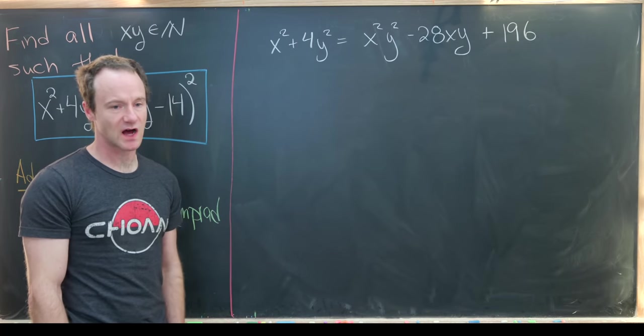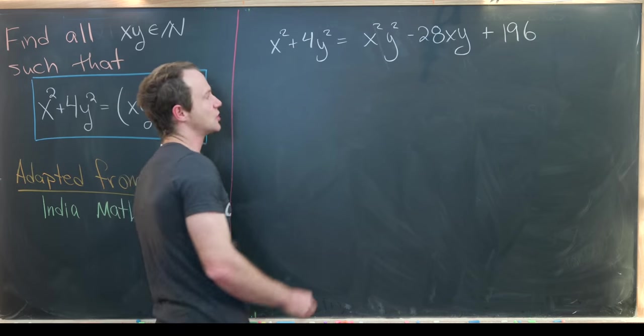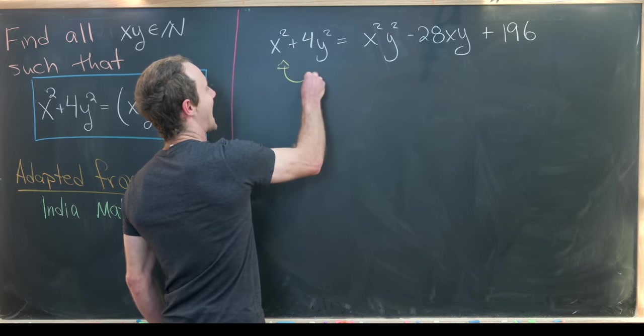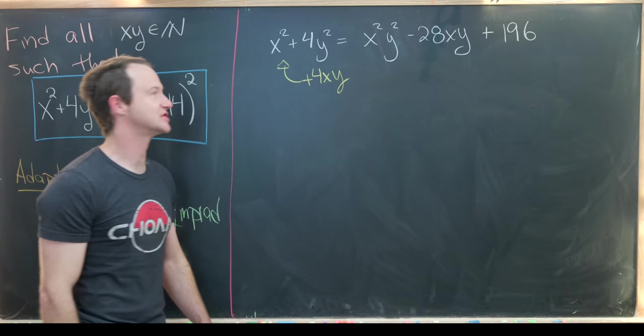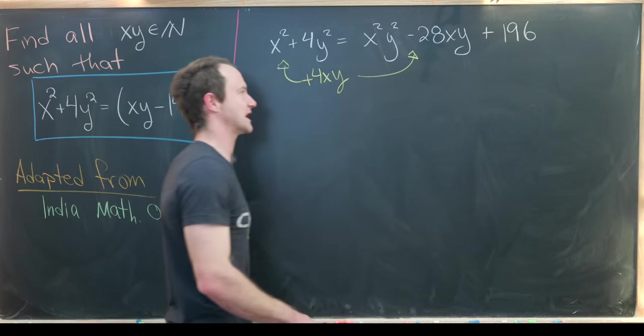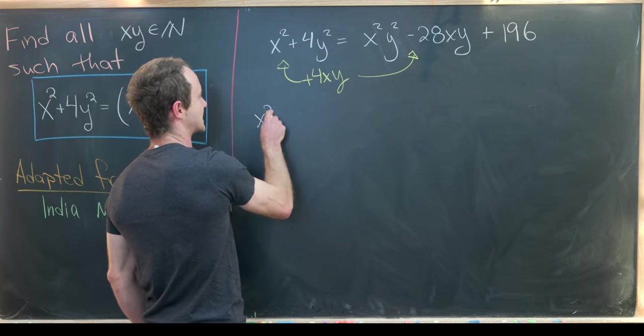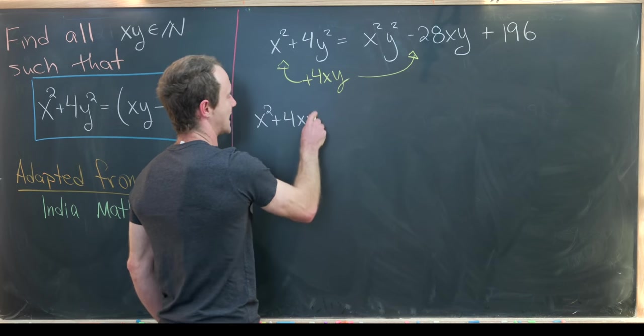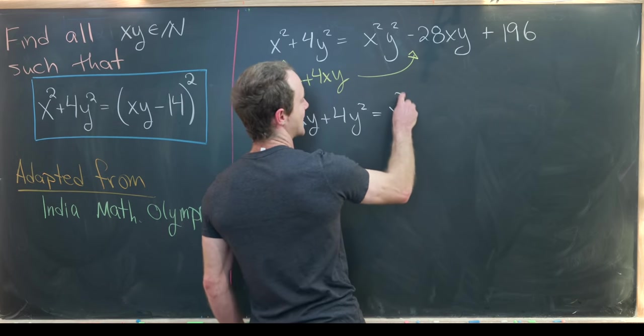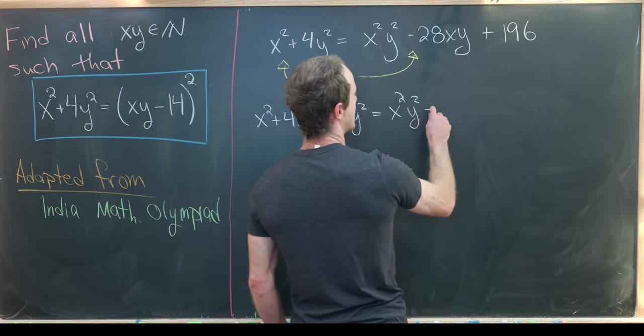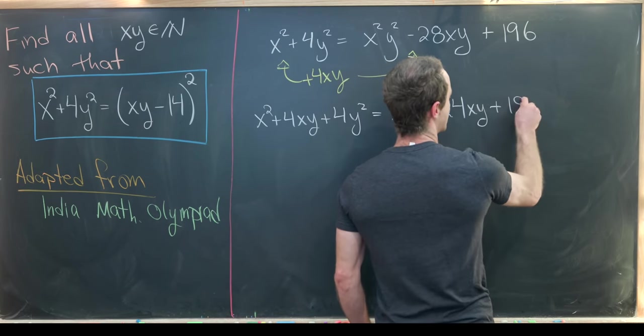I think maybe the first obvious thing will be to complete the square on the left hand side. We can do that by adding 4xy to the left hand side. But so that we haven't changed the equation, that means we also have to add 4xy to the right hand side. Let's see what that leaves us with. Over here we have x squared plus 4xy plus 4y squared, and over on the right hand side we have x squared y squared minus 24xy plus 196.